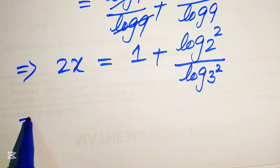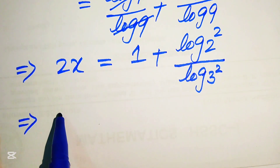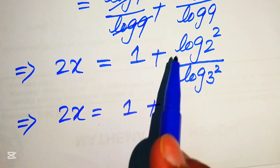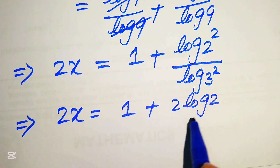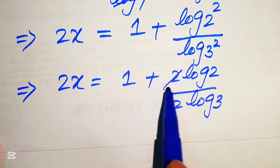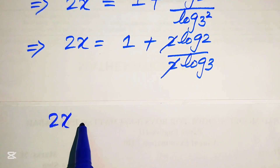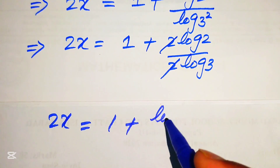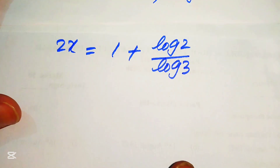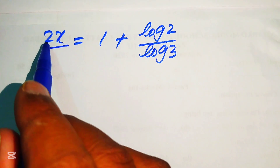In the next step we apply another property of log and move the exponent 2 to the front of the log. It becomes 2x equals 1 plus 2 times log 2 divided by 2 times log 3. The 2s cancel out, and after cancellation we get 2x equals 1 plus log of 2 divided by log of 3. Now to find x, we divide both sides by 2.